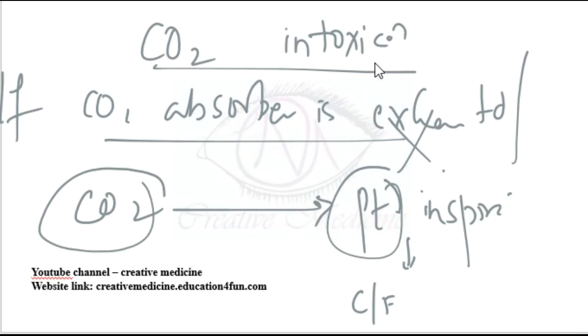So in such conditions, the carbon dioxide which is present in the expiratory circuit goes through the carbon dioxide absorber but it cannot be absorbed because of exhaustion of the carbon dioxide absorber, and thus it goes into the inspiratory gases and the patient breathes in carbon dioxide.